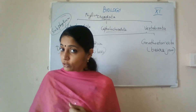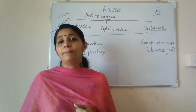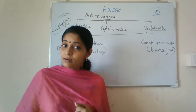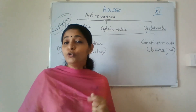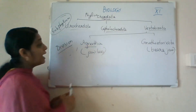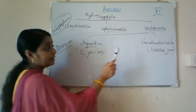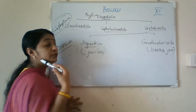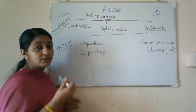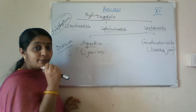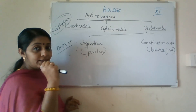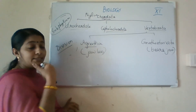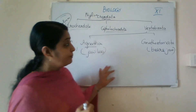These are the main features of subphylum Vertebrata. This subphylum Vertebrata is again classified into two divisions: Agnatha, meaning jawless organisms, and Gnathostomata, which bears jaws. Gnathostomata bears jaws.